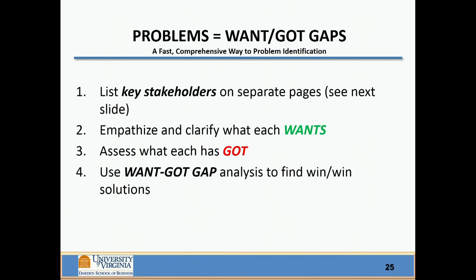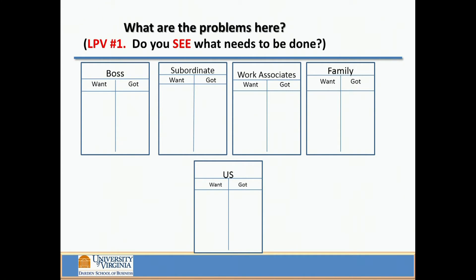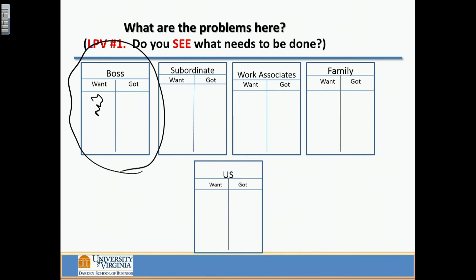We could use this want-got-gap approach as a way to look for overlaps between one person's problems and someone else's. In a particular case or situation, you might have a sheet of paper that would say, okay, here's what the boss wants and here's what he's got — where there are gaps, those would be problems for him. Now, if you don't know what the boss wants, then that's a problem and you may have to have an interview or discussion with the boss to figure out what those are.